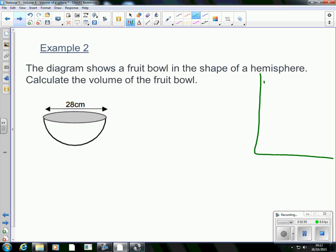Now here, what we have is we have half a sphere. So we want half of 4 thirds pi r cubed. Now you can write it like that. You can do it like that.